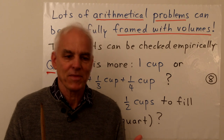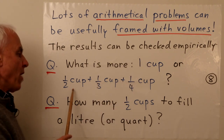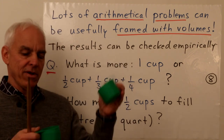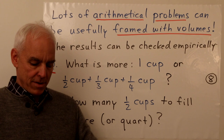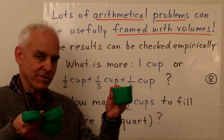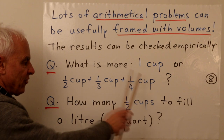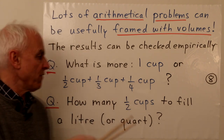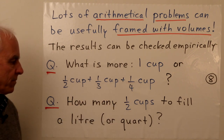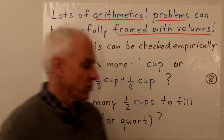For example: what is more — one cup, or one half-cup plus one third-cup plus one quarter-cup? Going back to our measuring cups, there's the one cup and the other three. Fill all of them up — which one has the most water? That's not trivial; some understanding has to be brought to bear. All they need to know is that two of these make a cup, three make a cup, and four make a cup.